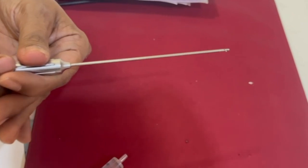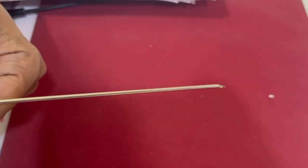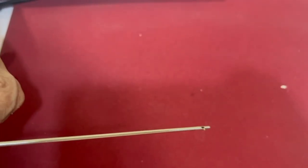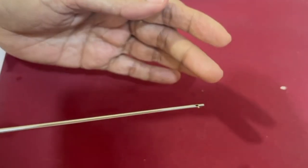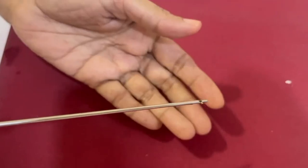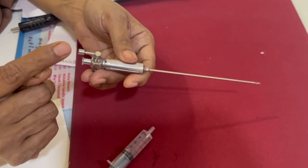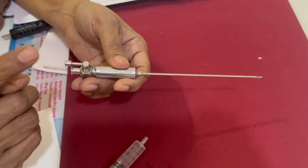When you pierce the abdominal wall, because of the spring action, immediately the sharp end goes back and the blunt end comes forward so that injuries to the underlying structures are prevented. How do we know that we have entered the peritoneal cavity safely?